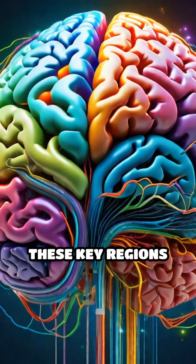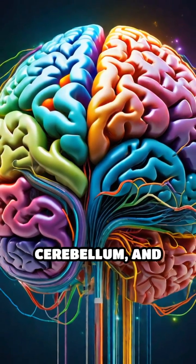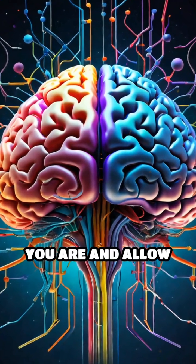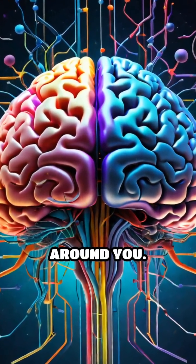These key regions, the cerebrum, cerebellum, and brainstem, work together seamlessly to make you who you are and allow you to interact with the world around you.